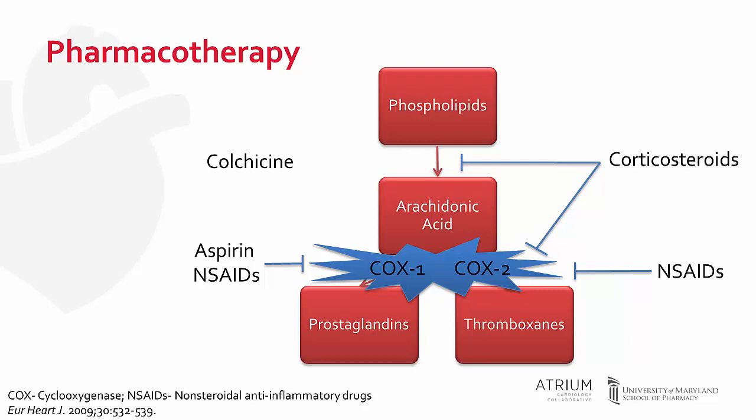Colchicine has been used for thousands of years for the prevention and treatment of inflammation. There have been several recent studies of colchicine for the treatment of both acute and recurrent pericarditis, and it is now an integral agent for the management of patients with pericarditis. Since colchicine concentrates heavily in white blood cells, or leukocytes, it is believed colchicine inhibits leukocyte microtubule formation to prevent inflammation.